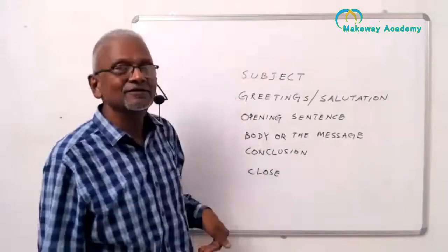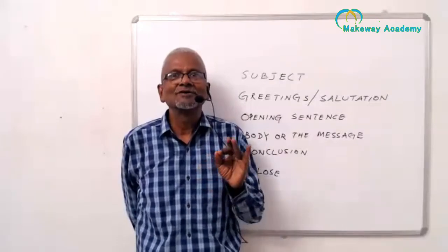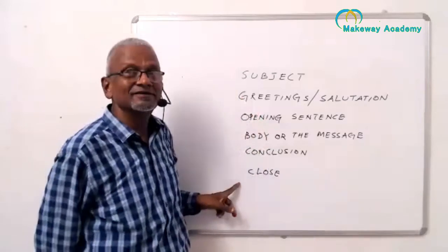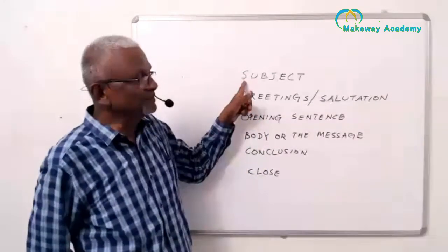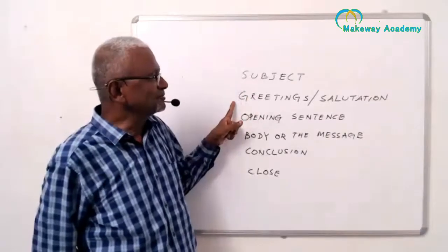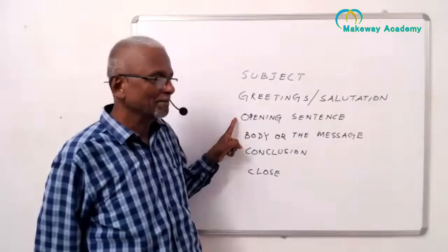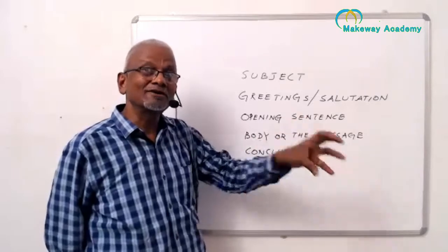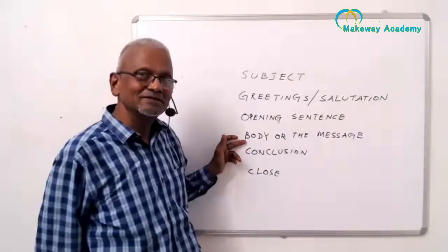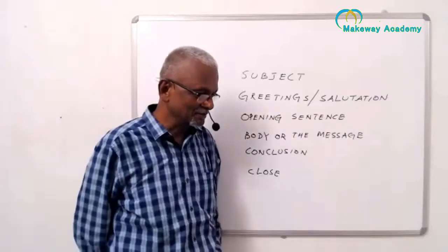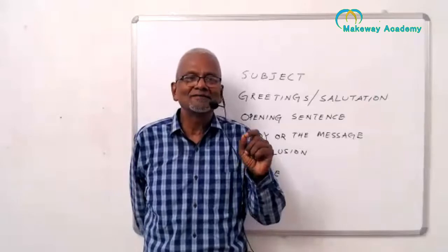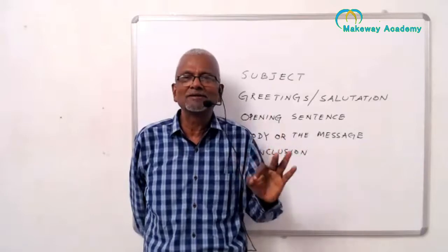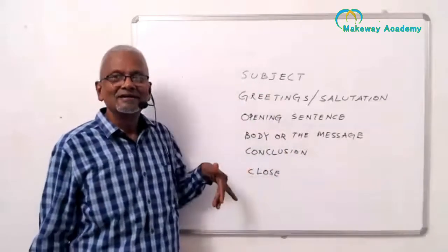So whenever you write a job application mail, you must remember all six elements: there must be a subject, greetings, an opening sentence that introduces the reader to the content of the mail, the body of the message, a conclusion, and a close. Now we will write a simple, ordinary job application email using all these elements.